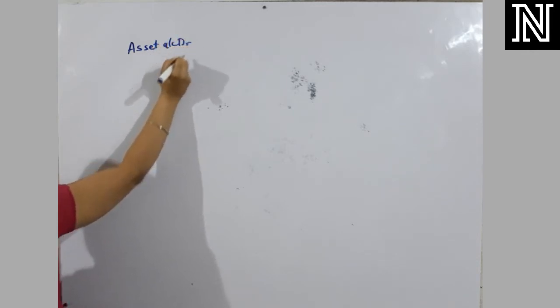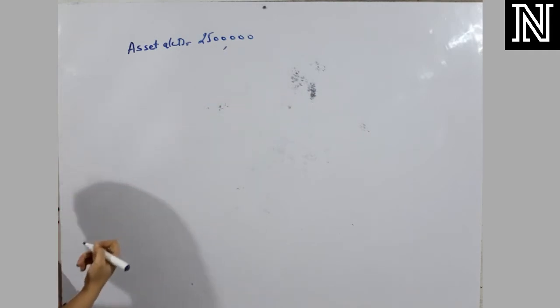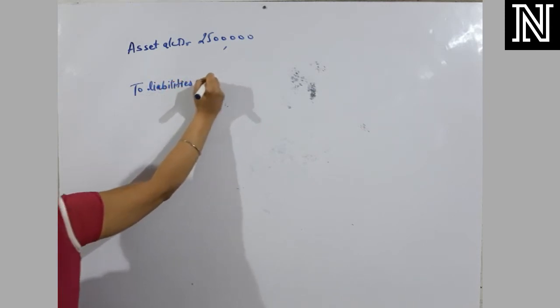Hello everyone. Because assets, they had took over for 25 lakh. So, asset account debited by 25 lakh. They have taken liabilities of 6 lakh. So, to liabilities, it will be 6 lakh.